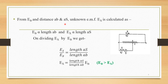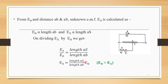From EB and distances AB and AS, the unknown EMF EX is calculated. The potential for storage battery B, EB, is directly proportional to the length AB, and the potential for the unknown experimental cell EX is directly proportional to the length AS. On dividing EX by EB, we get: EX / EB = AS / AB. Rearranging, EX = (AS / AB) × EB. The condition is that EB must be greater than EX.